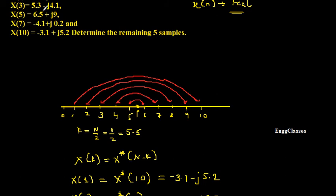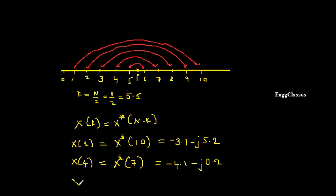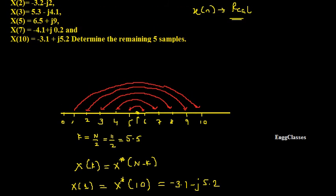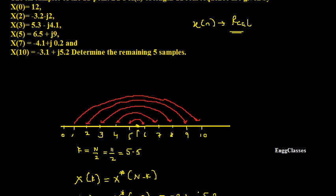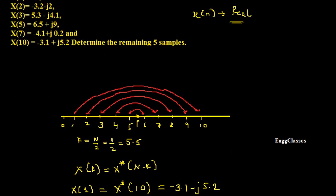X(5) and X(7) are given; X(6) is not given. Finding X(6): X(6) = X*(11 − 6) = X*(5). X(5) is given as 6.5 + j9, so X(6) = 6.5 − j9. The complex conjugate changes only the sign of the imaginary part.